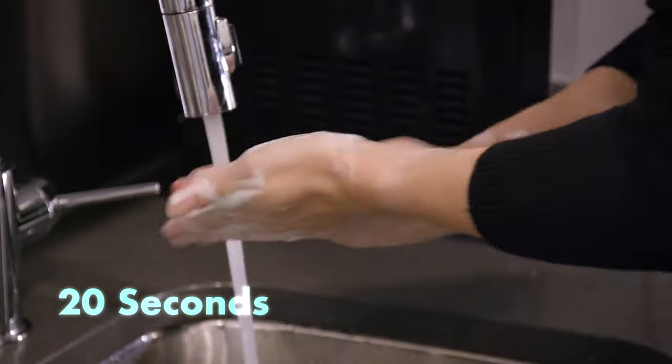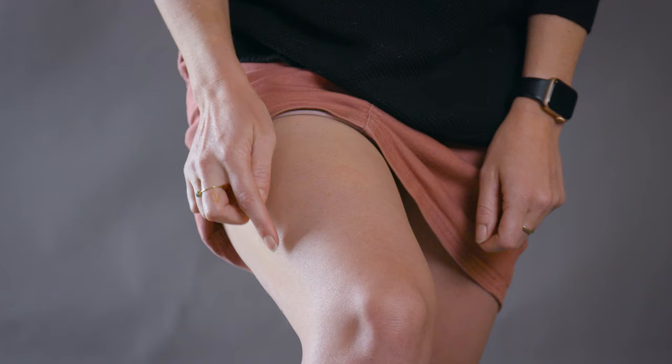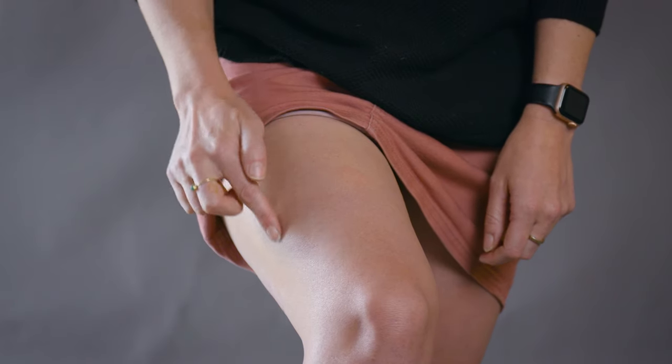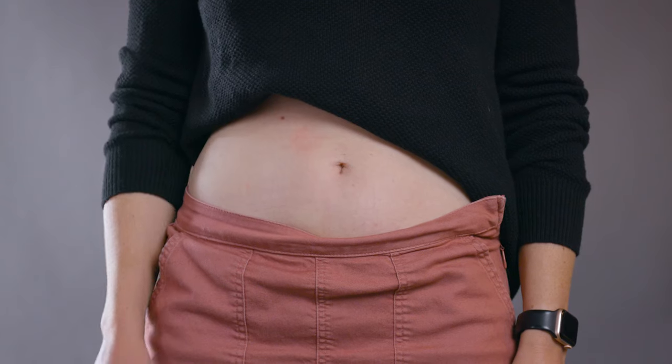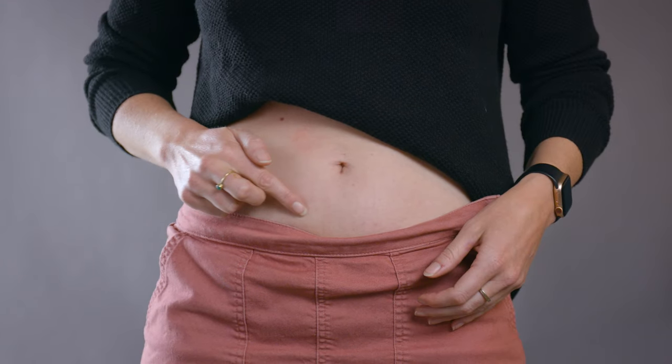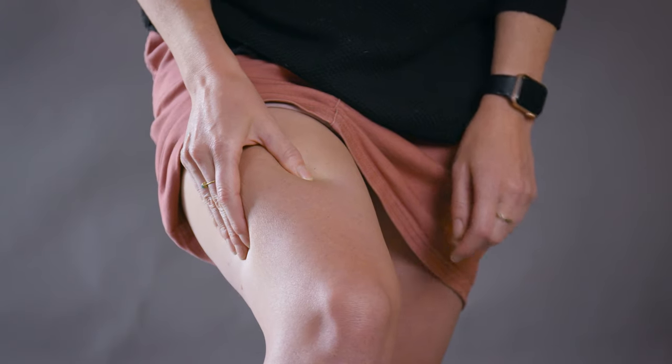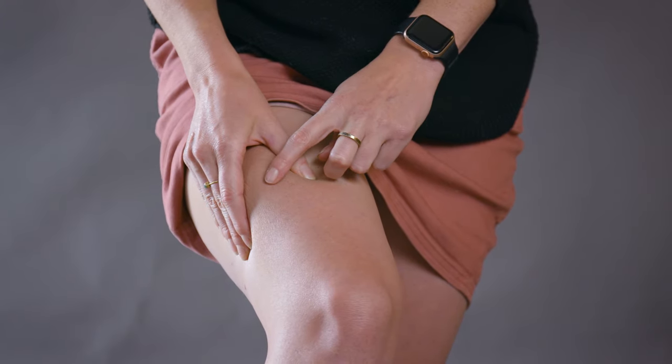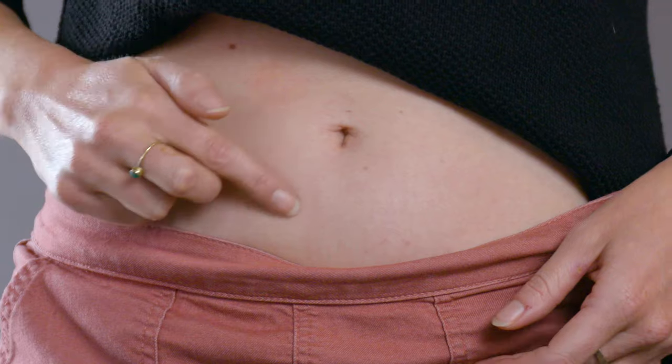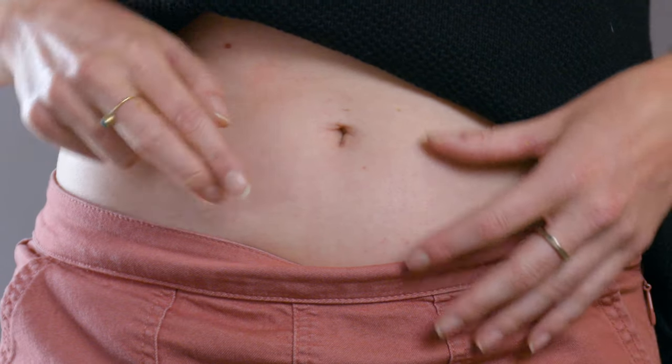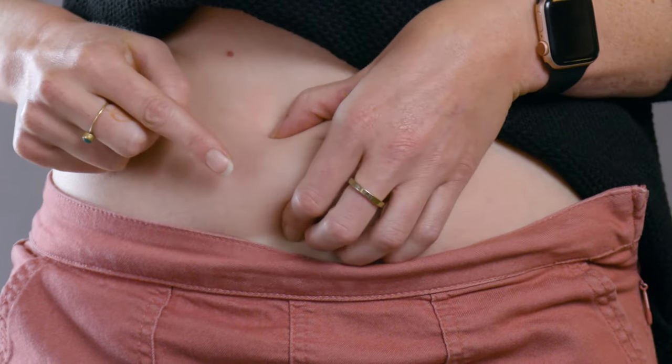Next, you will choose the area of your body for the injection. You may use either your thigh or your stomach. The area that you pick should not have any scars, moles, or tattoos. It's important to avoid any area that feels bony, and if you use your stomach, make sure that your injection site is at least two inches from your belly button.